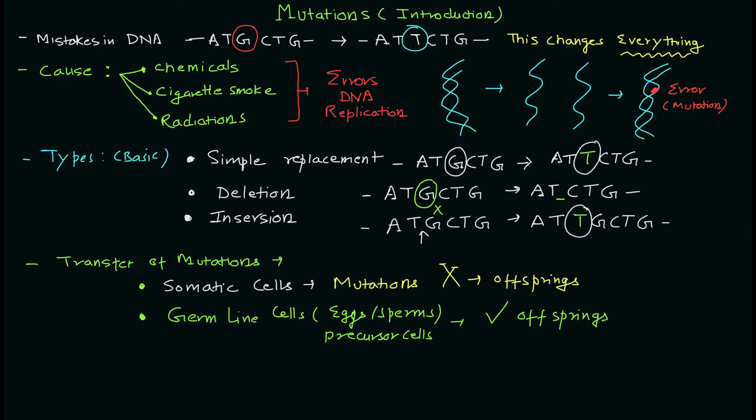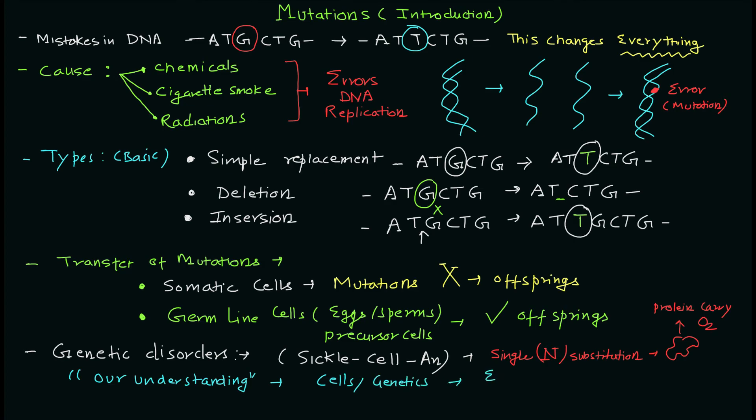Now the effect of mutations can lead to genetic disorders. Here I can give you one example: sickle cell anemia. This disease happens because of one nucleotide substitution in the gene of hemoglobin, the protein that carries oxygen. The gene has this mutation, and because of that, the function is affected and you get this disease.